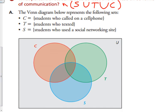So the Venn diagram represents the following sets. C is the students that called on a cell phone. T is the students who texted. And S is the students who used a social networking site.